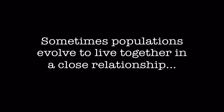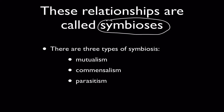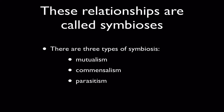Sometimes populations can evolve together in a very close relationship. These relationships in general are called symbioses — the word symbiosis just means living together. There are three types or classes of symbiosis: parasitism, mutualism, and commensalism. We're going to look at an example of each so you can understand all three types.